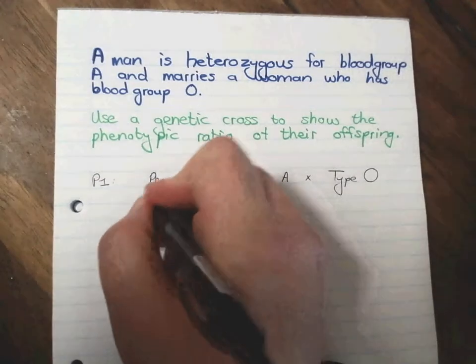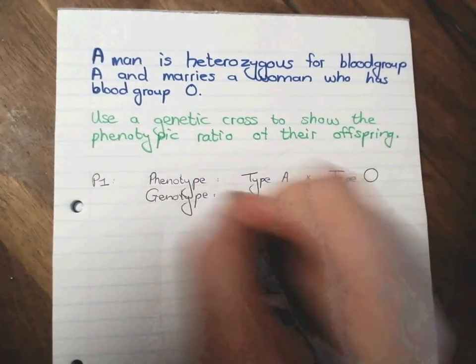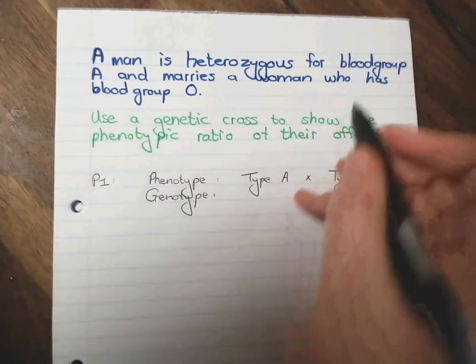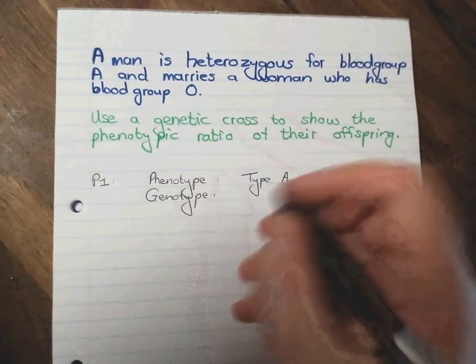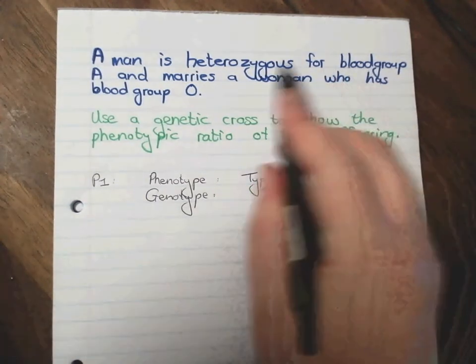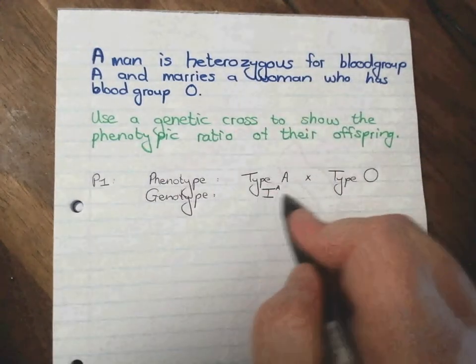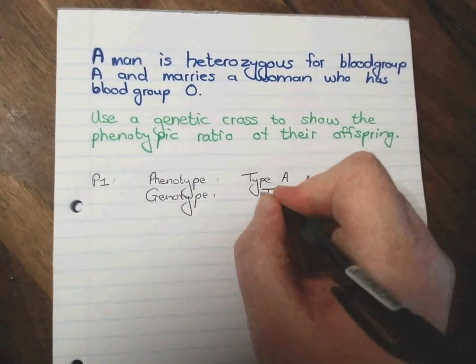Okay, then we move on to genotype. Now because they said heterozygous for blood group A, that means that we definitely know there's a capital letter in there. But because it's heterozygous, the two alleles are not the same. That means that the second one cannot be a capital I as well.